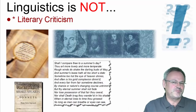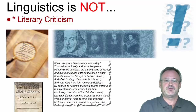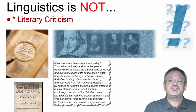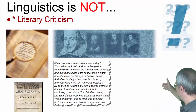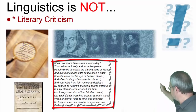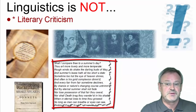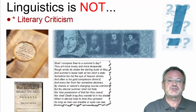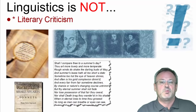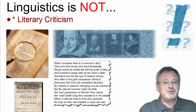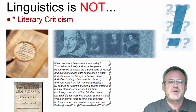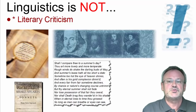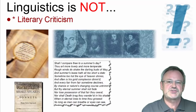Thirdly, linguistics is not mainly concerned with evaluating the use of language at special levels. We may be interested in the kind of language used in literary texts, for example in Shakespeare's sonnets — you can see one over here — but that does not turn us into critics. When we look at language use, we are interested in describing the facts: the patterns of sound, the grammar, and the vocabulary that are used. We are not trying to evaluate language in terms of aesthetics, moral, or other critical standards.